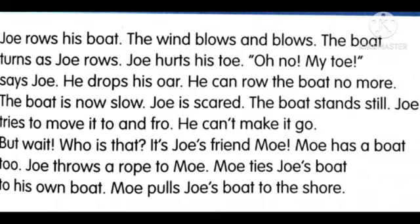Joe and Mo are rhyming words. Mo has a boat too. Can you see Mo came with a boat? Joe throws a rope to Mo. Joe has a rope in his boat and throws it to Mo. Mo ties Joe's boat to his own boat. A rope is like a very thick thread, used to tie one boat to another.